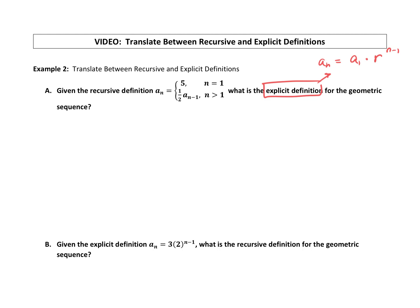Let's look at our recursive definition and see if we can identify those. Can we identify the first term? The first term is always given to us in the first line. n equals 1 is the first term, and that is a 5. So a sub 1 is 5.